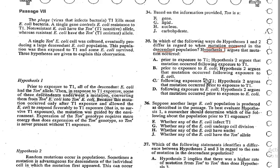First, they've asked us about Hypothesis 1. If we look at Hypothesis 1, we can see that in response to T1 exposure, some of the descendants underwent a mutation. So this is definitely when the exposure to T1 was present — that is when Hypothesis 1 states the mutation occurred.